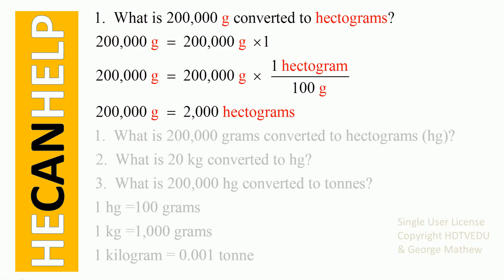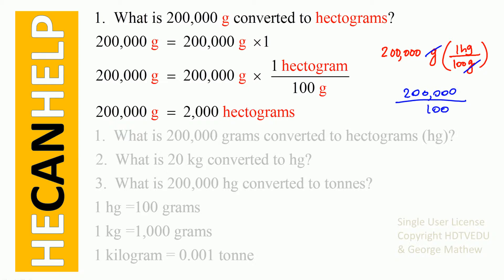For question one, what is 200,000 grams in hectograms? We write 200,000 grams and note that one hectogram is 100 grams. We can cancel grams and grams. So 200,000 divided by 100 gives us 2,000 hectograms. We replaced 1 with one hectogram divided by 100 because 100 grams equals one hectogram, giving our answer of 2,000 hectograms.